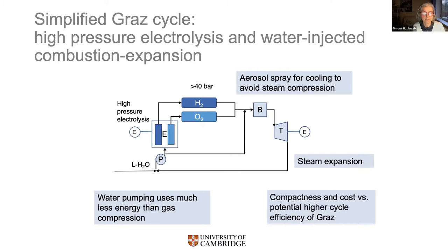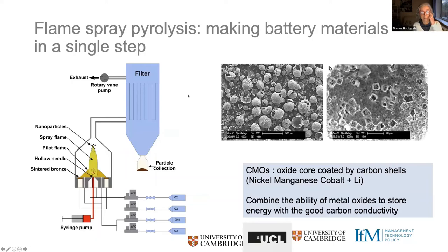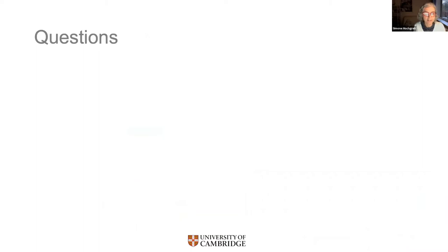Finally, we're looking at using combustion to produce battery materials. New materials considered for batteries are carbon metal oxides — nickel manganese cobalt (NMC) compounds using lithium — where we want these materials coated with carbon for good electrical conductivity. This potentially could be a one-step production process for micron-sized particles combining the energy storage capability of metal oxides with good carbon conductivity. We're just starting experiments on this.